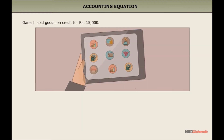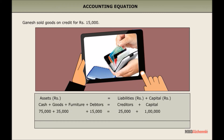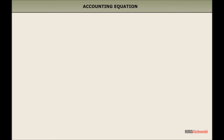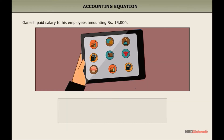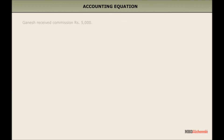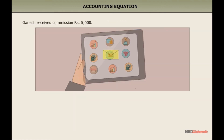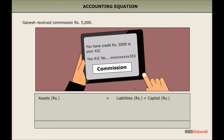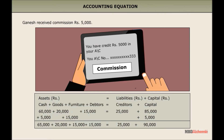Transaction 6: Ganesh sold goods on credit for 15,000 rupees. This transaction decreased goods by 15,000 rupees and added debtors on the asset side by the same amount. Transaction 7: Ganesh paid salary to his employees amounting 15,000 rupees. This decreased cash by 15,000 rupees and capital by the same amount. Transaction 8: Ganesh received commission of 5,000 rupees. This increased cash by 5,000 rupees and capital by the same amount.